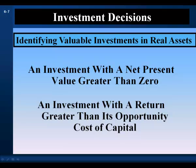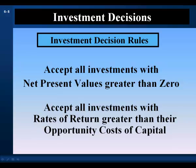So we have two equivalent criteria to identify valuable investments in real assets, and from these criteria come two general decision rules. To increase wealth, we should accept all investments with net present values greater than zero. Alternatively, to increase wealth, we should accept all investments with rates of return greater than their opportunity cost of capital. In a previous lecture, we developed these decision rules in the context of a single period investment, and in that context, these are equivalent decision rules.